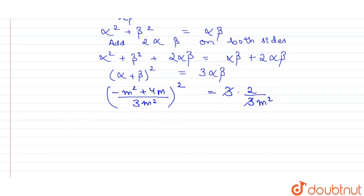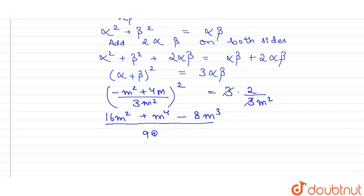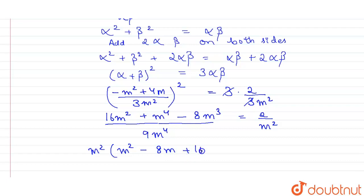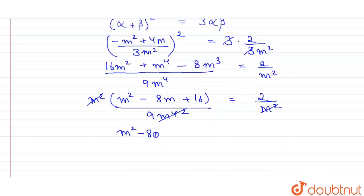Cancelling 3 and 3, and opening the squared term, we get (16m² − 8m³ + m⁴) / 9m⁴ = 2/m². Simplifying — the m² terms cancel, the 9 moves to the right-hand side — our equation becomes m² − 8m + 16 = 18.